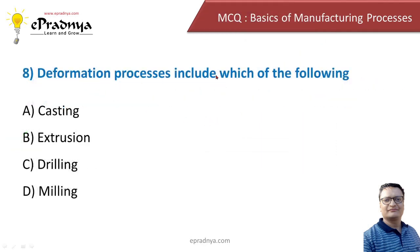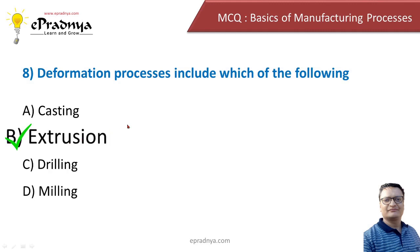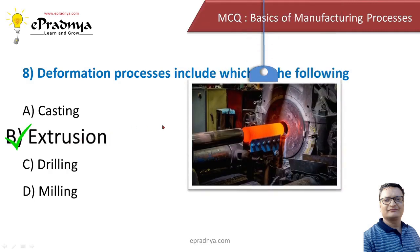Deformation processes include which of the following? Options: casting, extrusion, drilling, and milling. The correct answer is extrusion. Extrusion is a type of deformation or forming process in which forces are applied to a material as it passes through a constricted opening to obtain a desired shape and size.